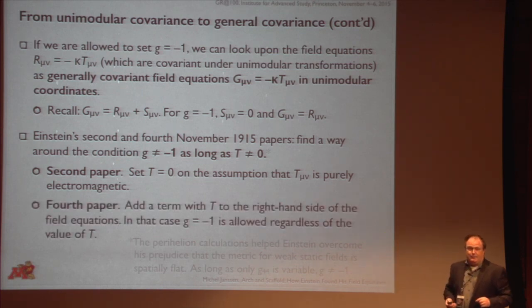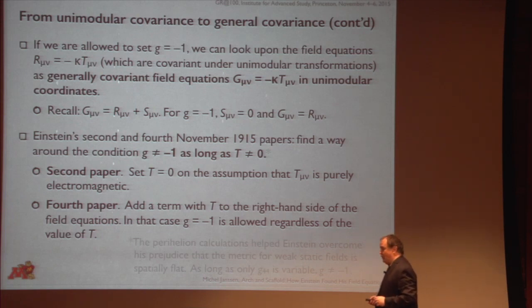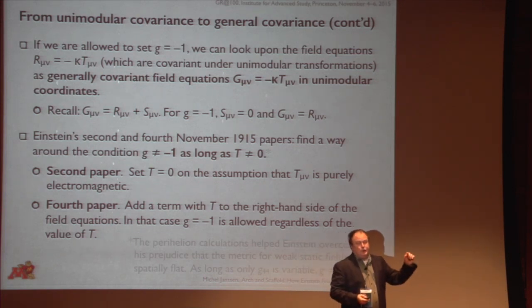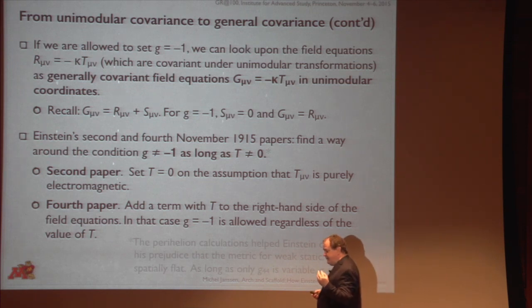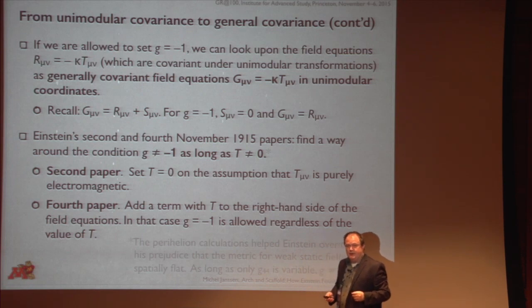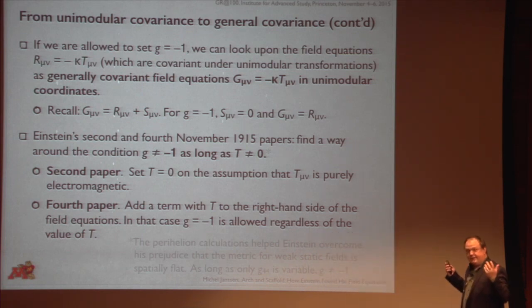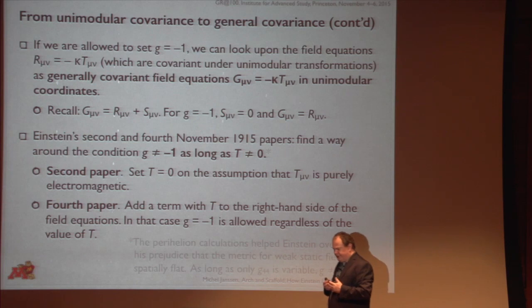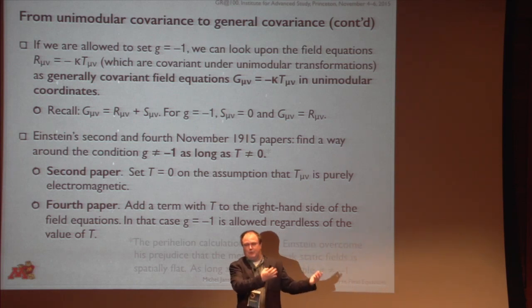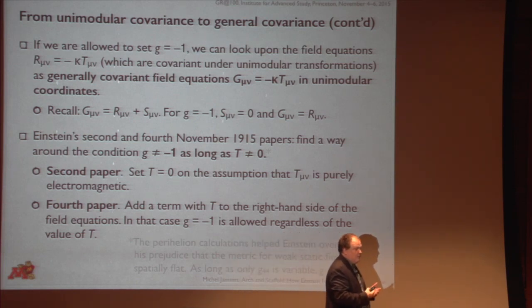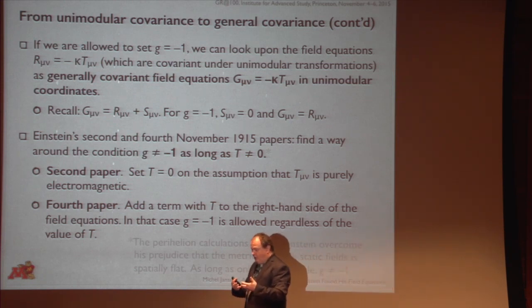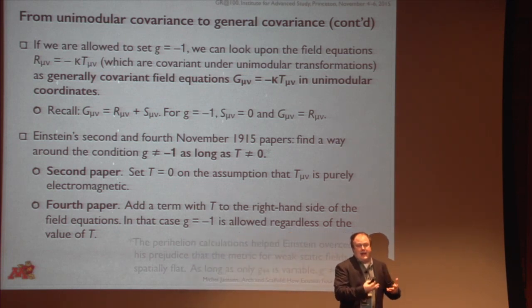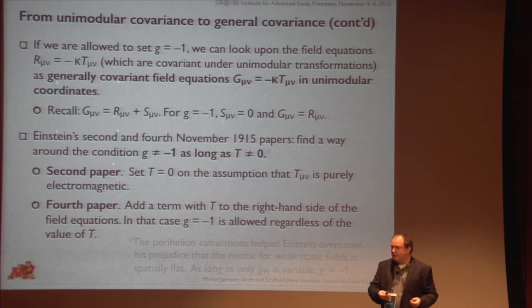And in the fourth paper, he did something much more clever: he added a term with T — the trace — to the right-hand side of the field equations. If you do that, you can now set G equal to minus one regardless of the value of that trace. So that's it. And then he also has another argument convincing him that this time he's got it and doesn't have to come back again to tweak the equations: namely that in this model, the gravitational energy-momentum enters the field equations in the exact same way that the matter energy-momentum enters the field equations.